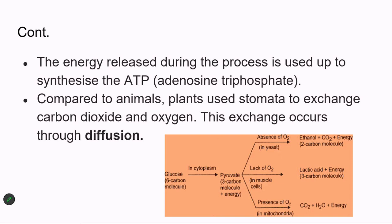In humans, oxygen is present, so after glucose is converted to pyruvate in the cytoplasm, the pyruvate is broken down in the presence of oxygen inside the mitochondria. The mitochondria is a cell organelle present in the cytoplasm. Inside the mitochondria, pyruvate is broken down into carbon dioxide, water, and energy. CO₂ is released through exhalation, and the energy is utilized. This is known as aerobic respiration, which yields much more energy than anaerobic respiration.